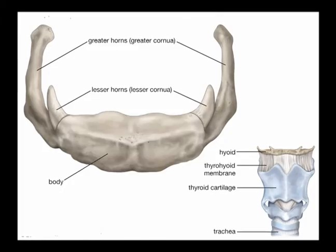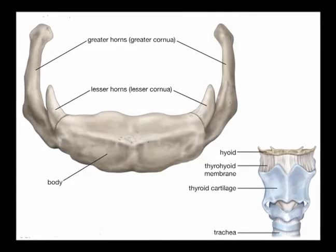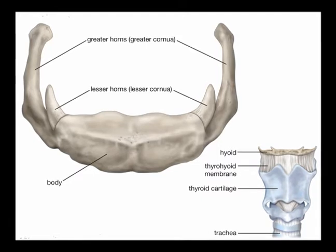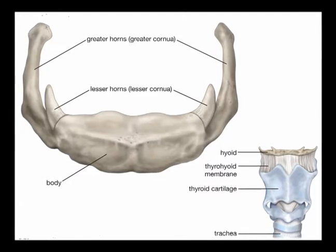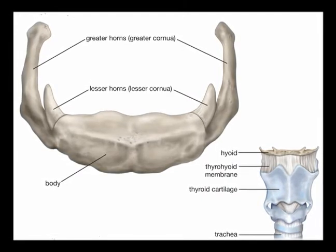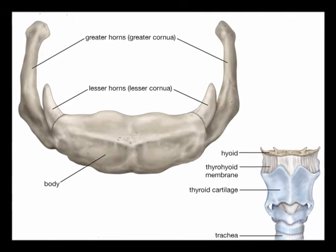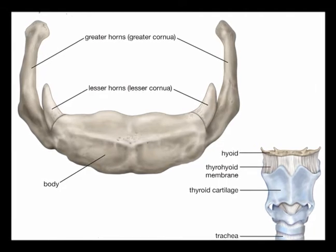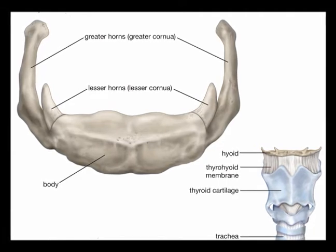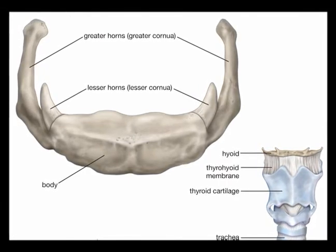It is situated in the midline of the cervical spine anteriorly at the base of the mandible and posteriorly at the fourth cervical vertebrae. Its anatomical position is just superior to the thyroid cartilage.